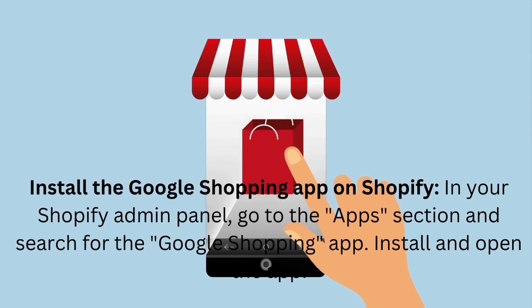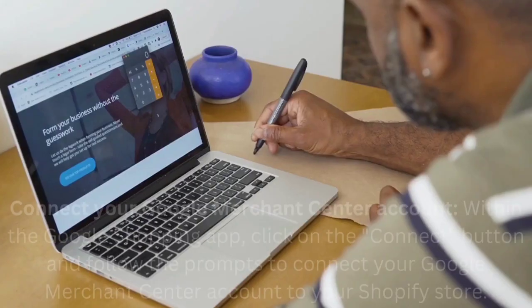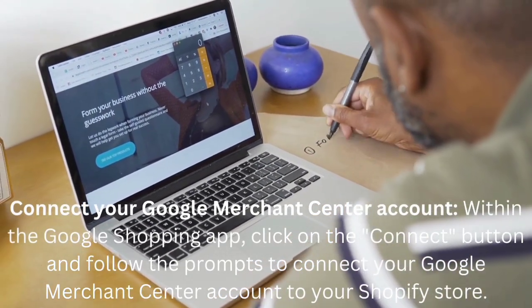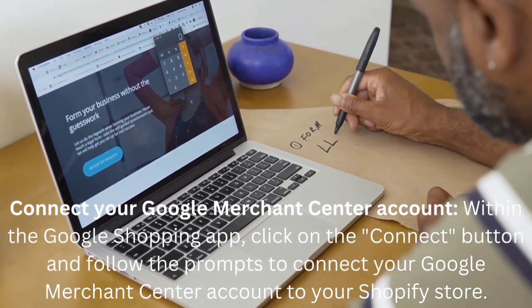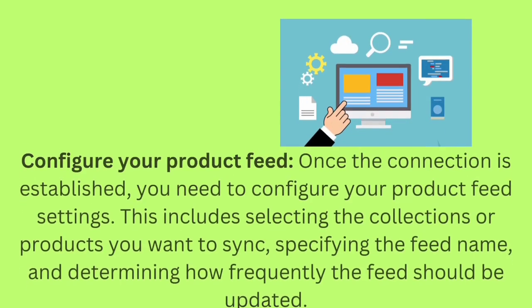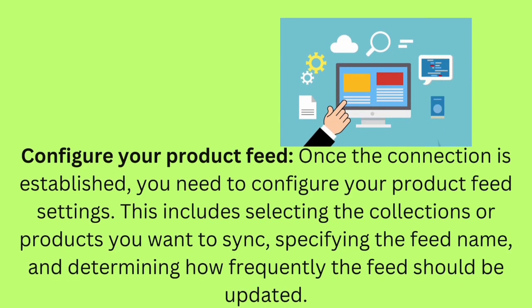Install the Google Shopping app on Shopify. Then connect your Google Merchant Center account within the Google Shopping app by clicking the connect button and following the prompts to link it to your Shopify store. Configure your product feed settings once the connection is established, including selecting the collections or products you want to sync, specifying the feed name, and determining how frequently the feed should be updated.